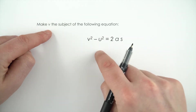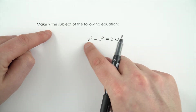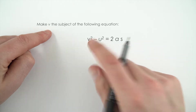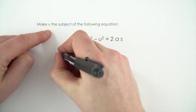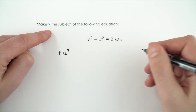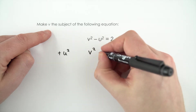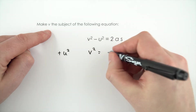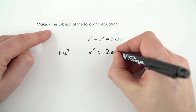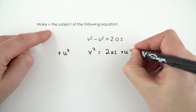The first thing I'm going to do is try and get the v term on its own. I'm going to do this by adding u squared to both sides. So we can then say that v squared is equal to 2as plus u squared.